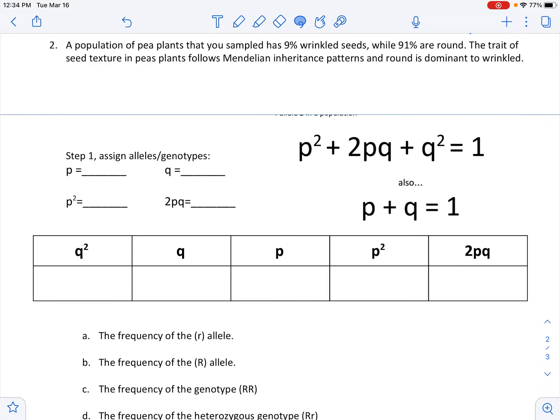Okay, problem two is a very similar setup to problem one. It's going to give us the inheritance here - the trait of seed texture in pea plants follows Mendelian inheritance patterns, and round is dominant to wrinkled. So we have p² would be basically that genotype, 2pq that would be this genotype, q² is this genotype, and so on. So we've kind of assigned our alleles there.